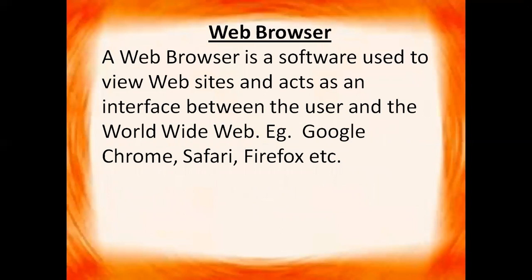Next we have the web browser. A web browser is software used to view websites and acts as an interface between the user and the World Wide Web. Examples include Google Chrome, Safari, Firefox, and others. Without a web browser, we are not able to access the internet. We use these softwares to access web pages, use websites, and access the information available on the internet. The web browser acts as an interface between the user and the World Wide Web.